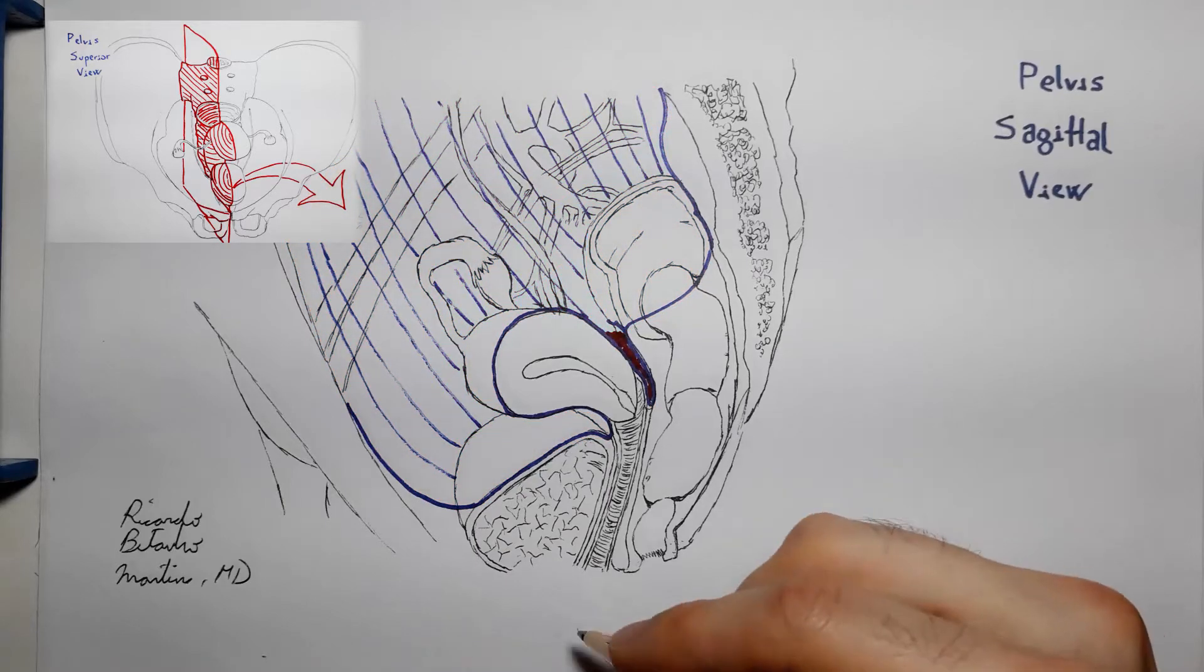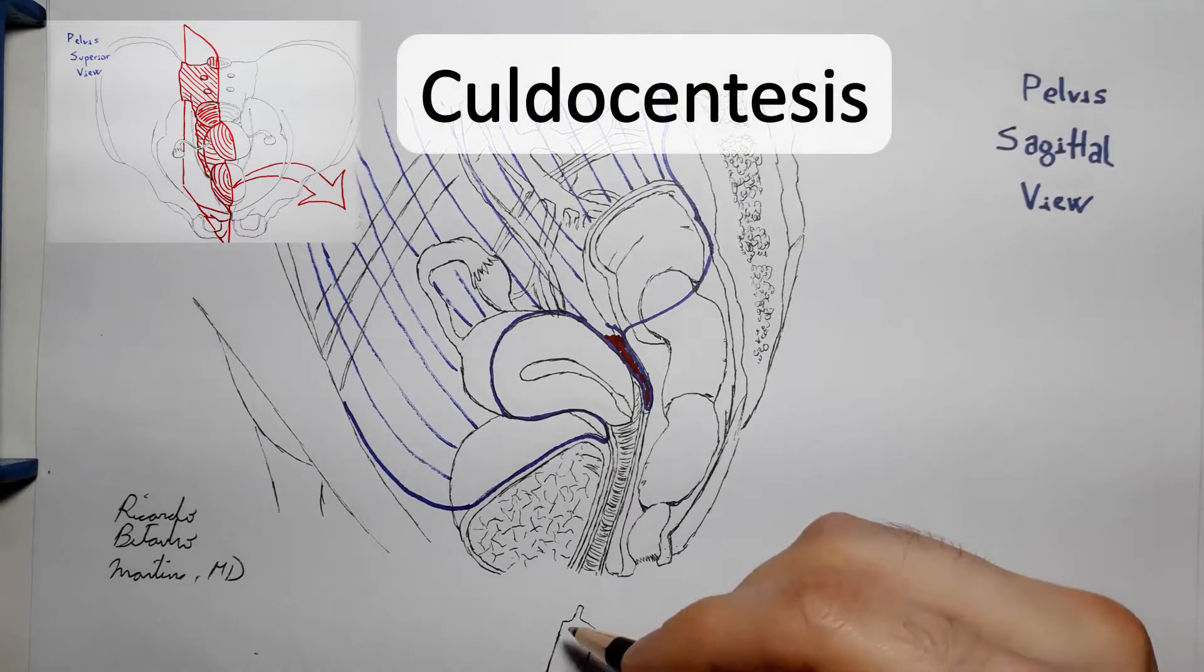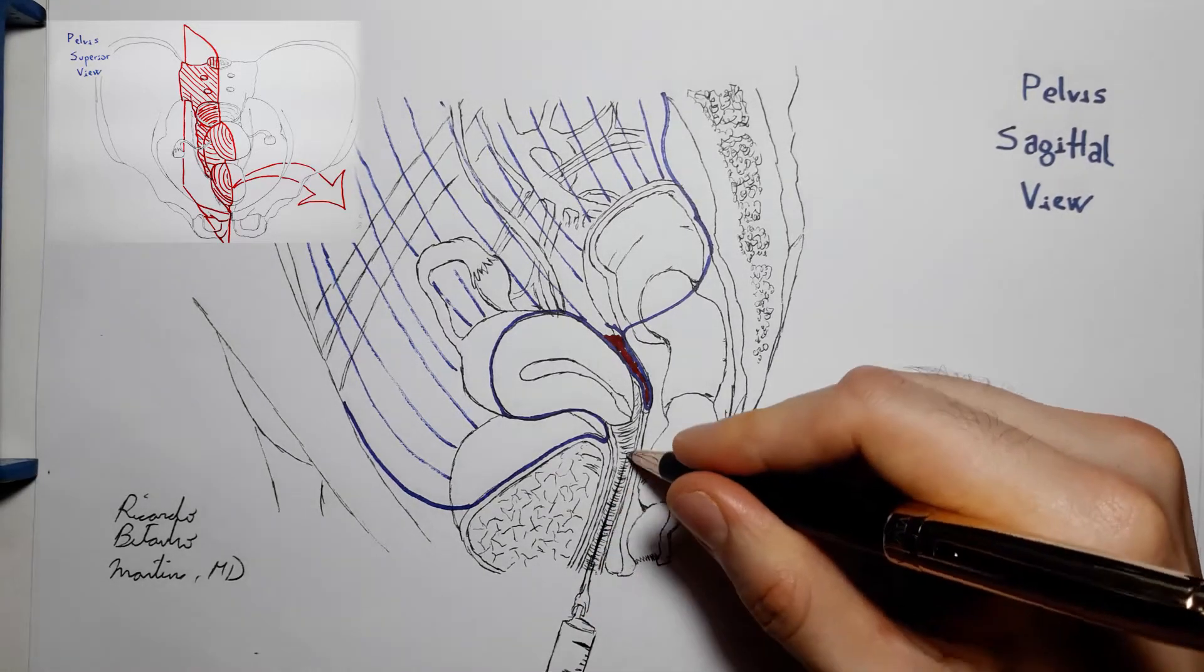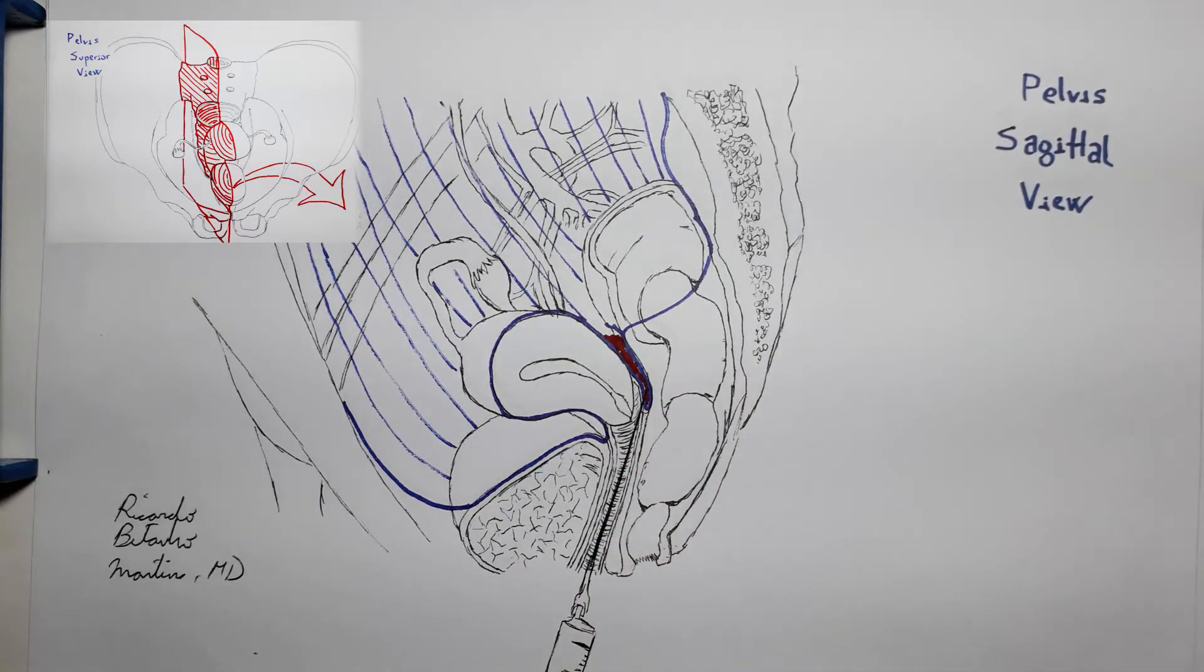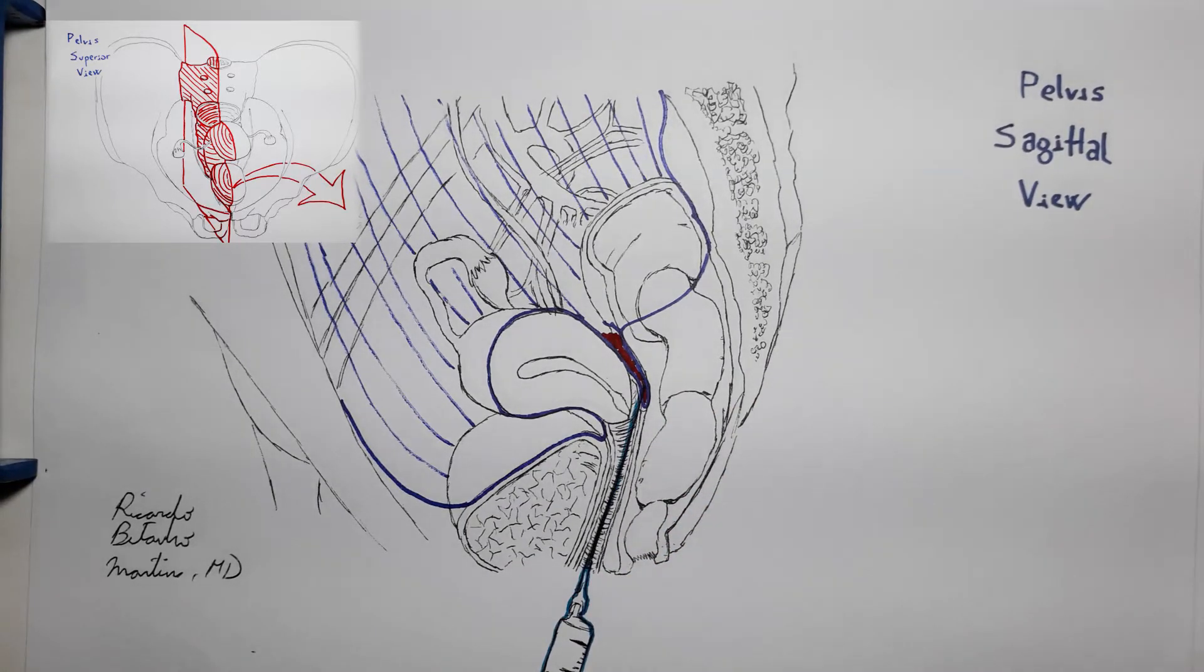Traditionally, this verification was made through culdocentesis, basically inserting a needle into the vagina and perforating the posterior vagina wall to reach the recto-uterine pouch. And this procedure still exists, however, mostly in the absence of ultrasound.